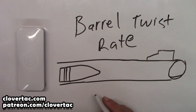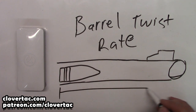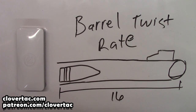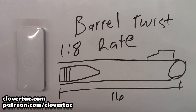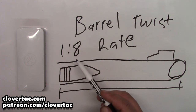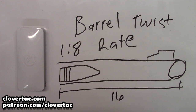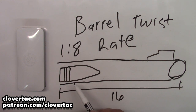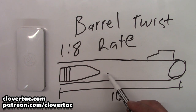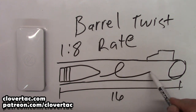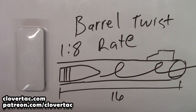To illustrate what we're talking about, we've got our barrel here, we've got our projectile. Let's just say this is a 16 inch barrel, and let's say we're dealing with a one-in-eight twist — one revolution per eight inches of barrel. So if this is a 16 inch barrel, then what's going to happen is this projectile is going to make two complete revolutions by the time it exits.